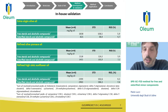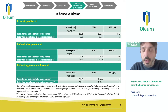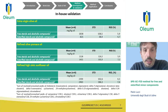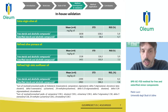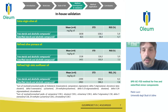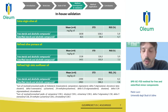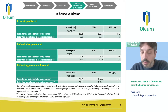Moving to the in-house validation, we selected three different types of oil as shown in the table. It is quite clear that the level of free and esterified minor compounds are quite different across the three types of oil. What is important here is to look at the coefficient of variation, which is lower than 7.6% in our cases, so the repeatability of the method was quite good.